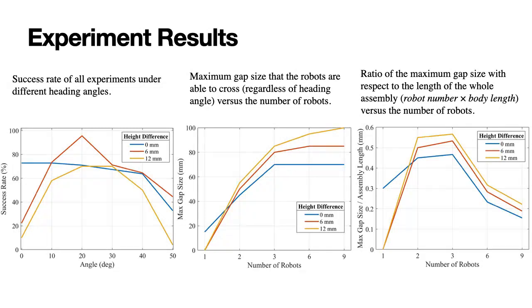The second figure shows the maximum gap size that the robots are able to cross versus the number of robots. We may see that as the height difference increases, the maximum gap size the robot can cross increases. This is because of the height drop we mentioned previously.